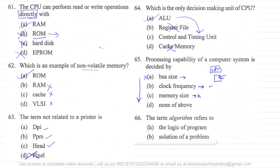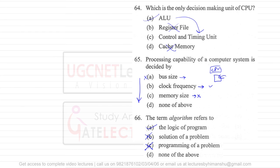Now for question number 66, they are saying the term algorithm refers to. Now this algorithm is the set of instructions, I mean, algorithm is defining the logic of solving a particular problem. Now when I am saying algorithm, it can say it is the logic of the program, yes. Solution of the problem, no. Programming of a problem, no. So I will say the algorithm is referred to as the logic of the program and nothing else.